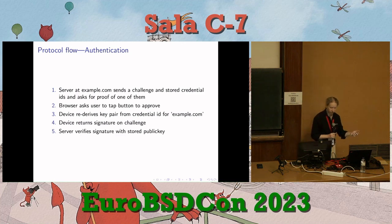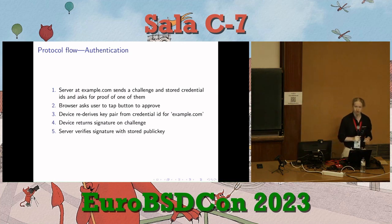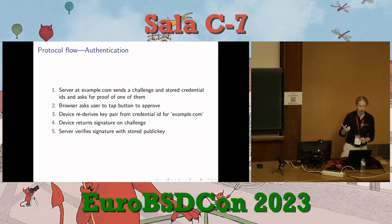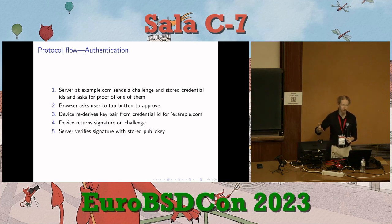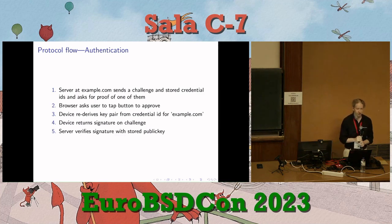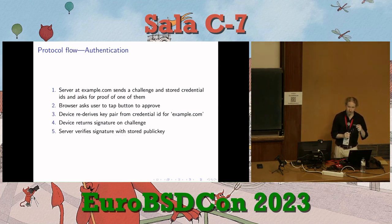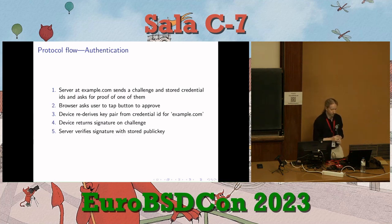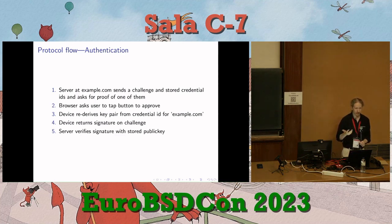During authentication, the server at example.com generates a challenge and sends it along with a list of stored credential IDs — the ones registered for my account — and asks the device to prove it has one. The browser asks the user to tap the button. The device takes the credential ID and the website origin, and deterministically derives the same private key as when the key pair was originally generated. It returns a signature on the challenge, and the server verifies that signature with the stored public key.